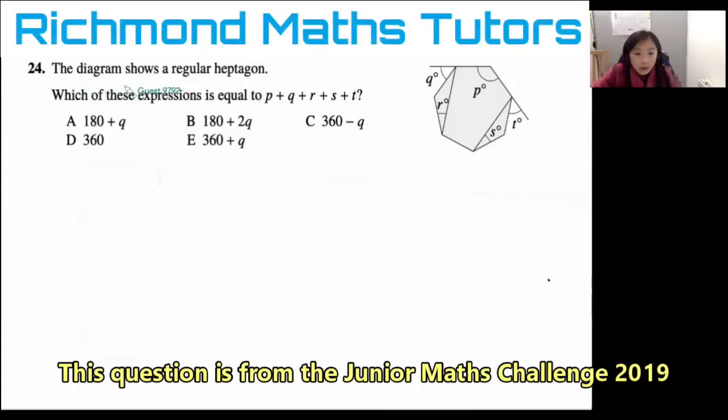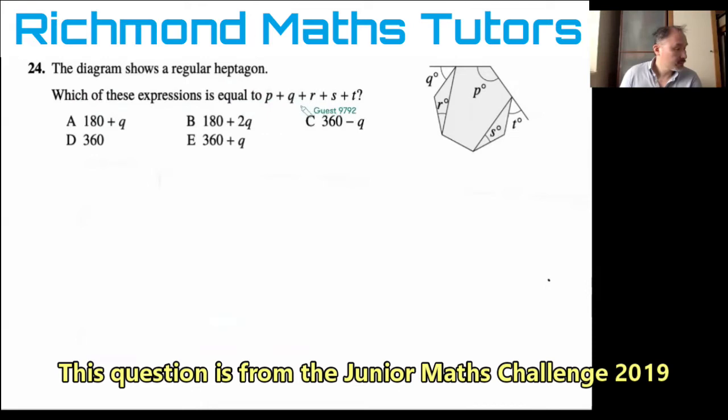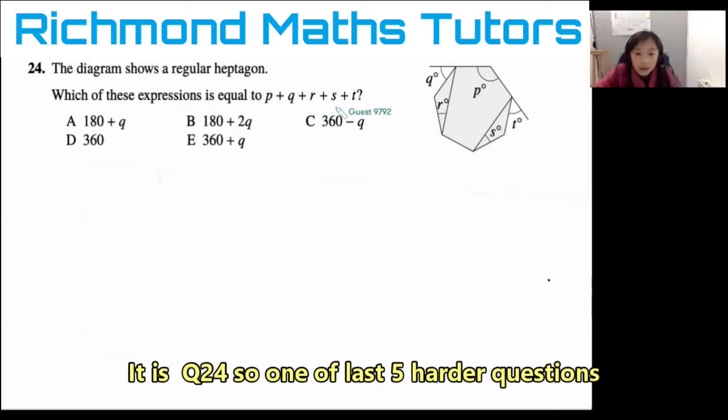The diagram shows a regular heptagon. Which of these expressions is equal to P plus Q plus R plus S plus T?